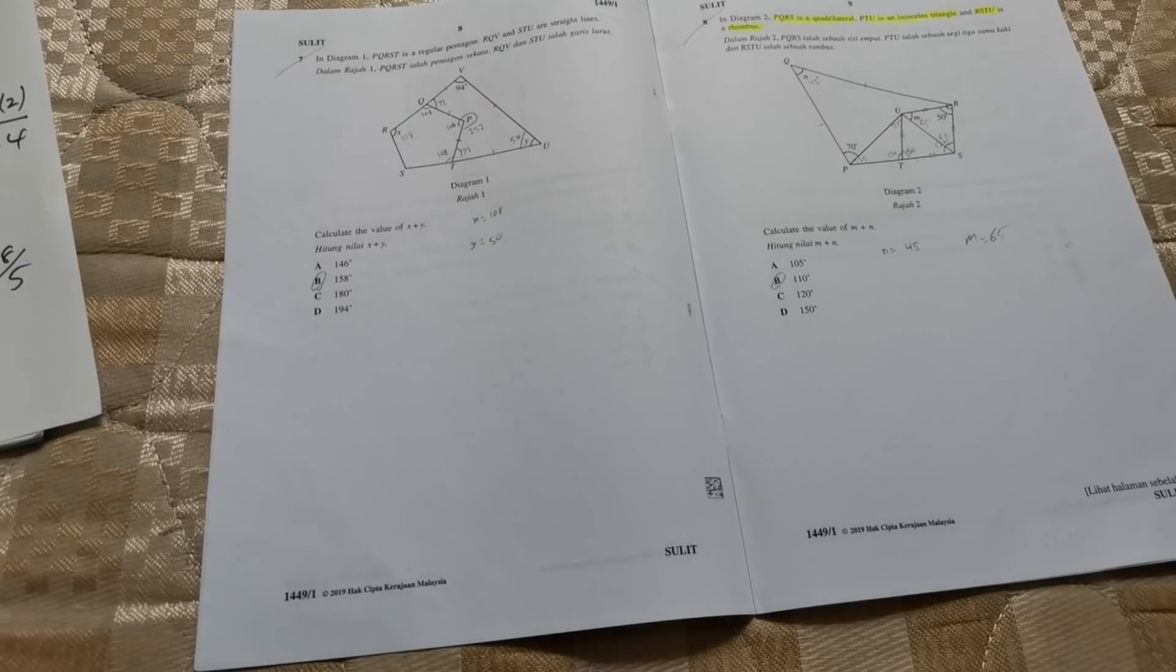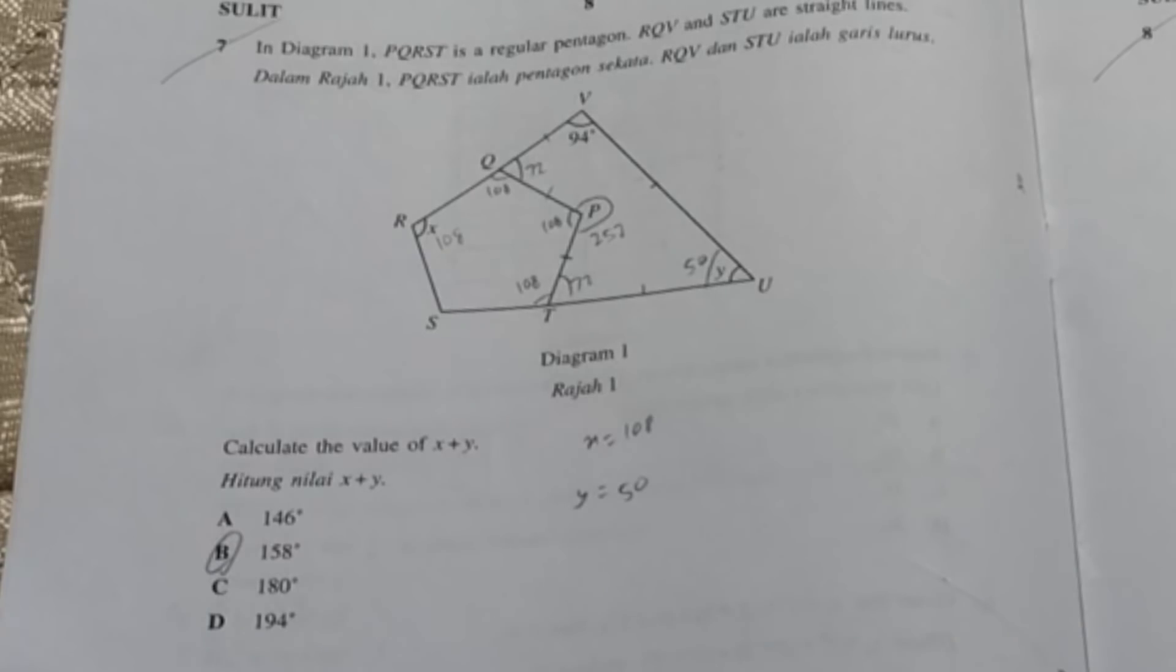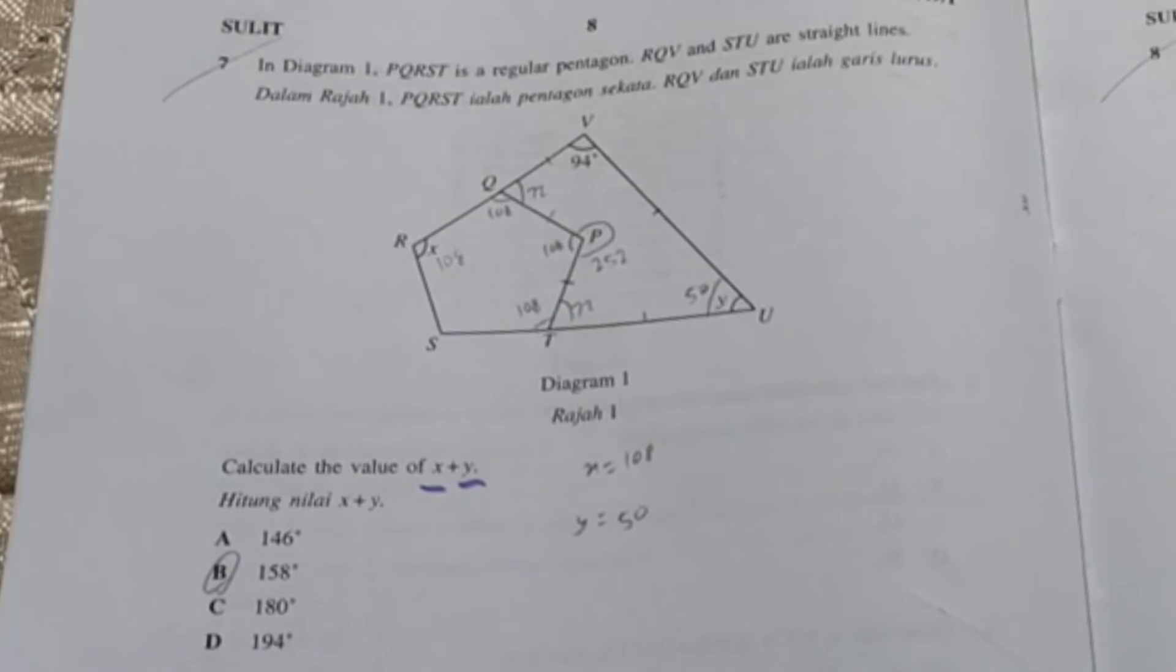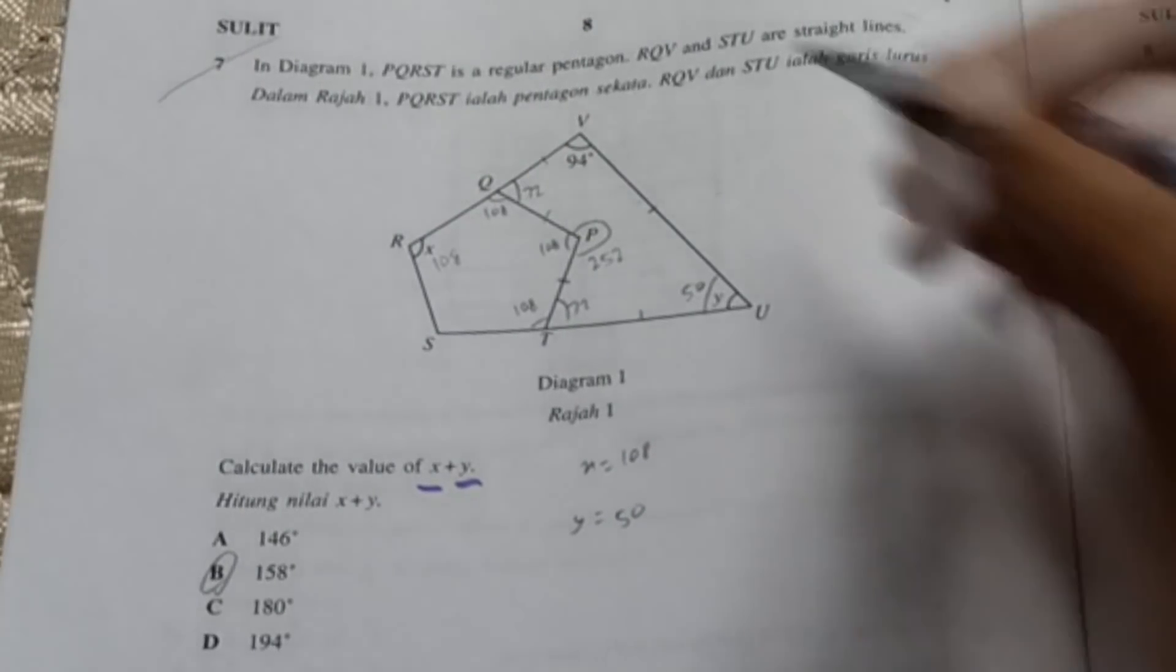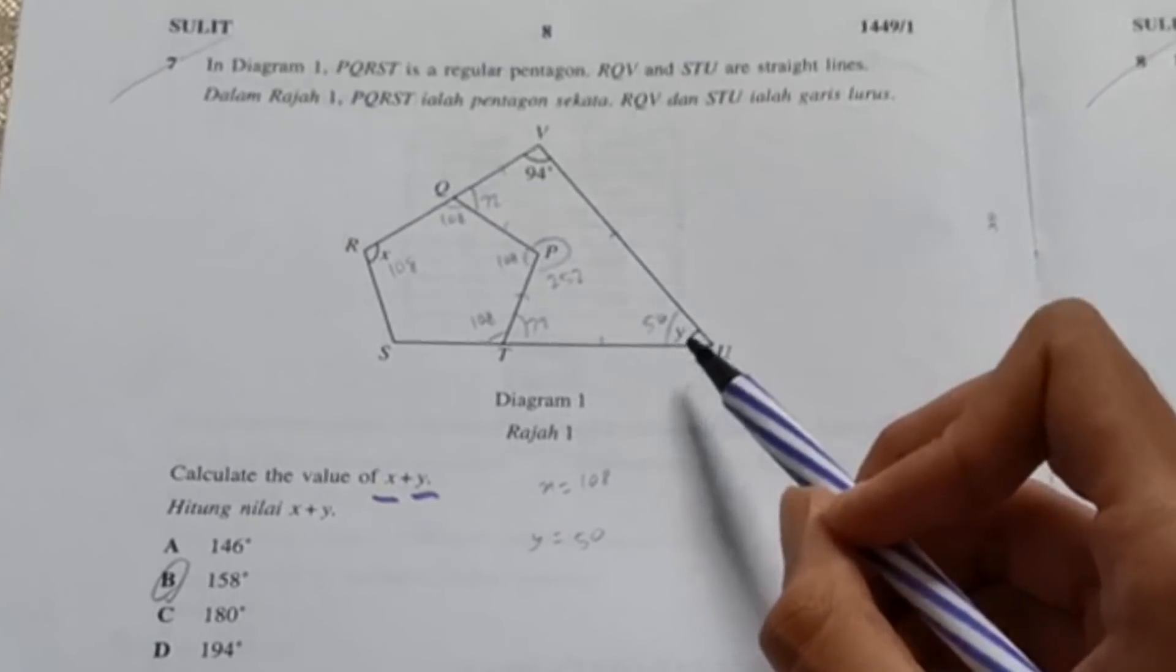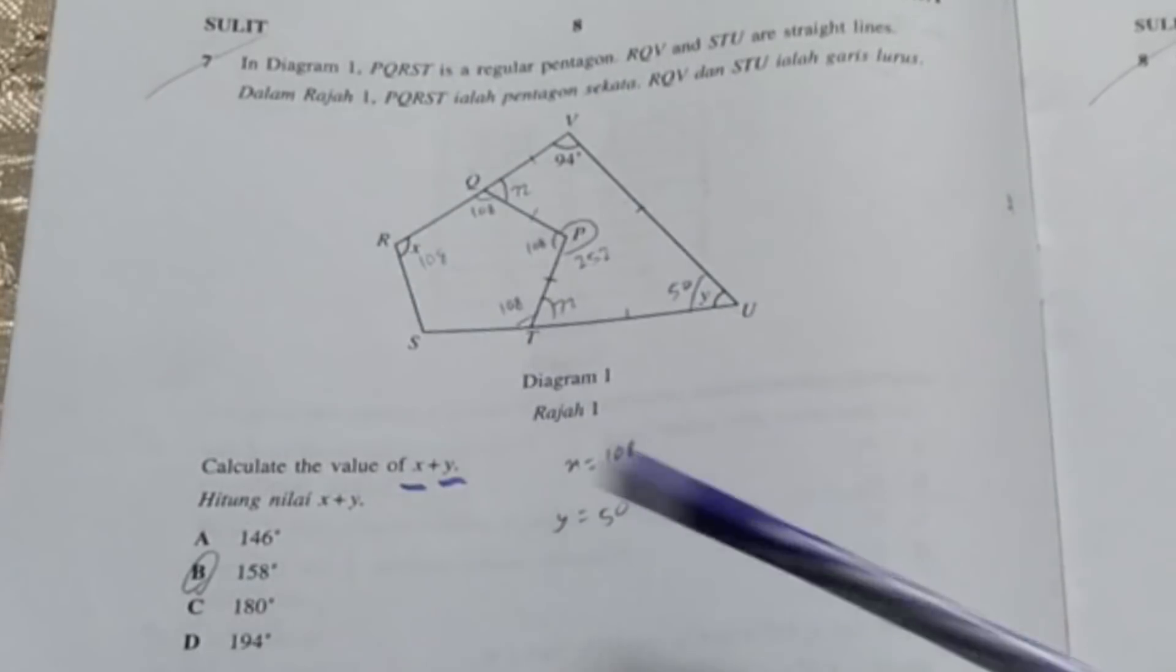I'm gonna talk about one type of polygon question that comes out every single year. It's very easy but students tend to overcomplicate it, including me. It's the x plus y question. You do not need to find the specific values of x and y, you need to find them as a whole.